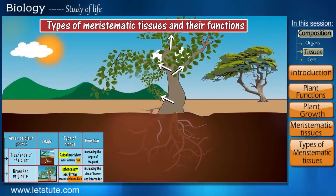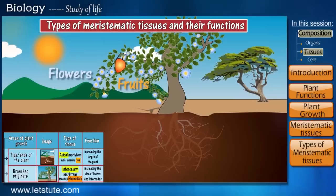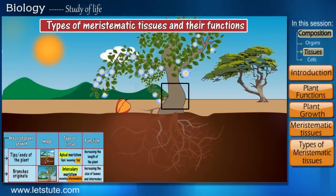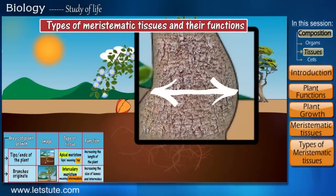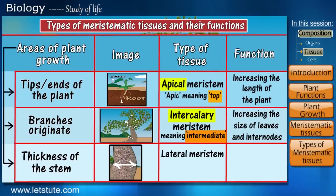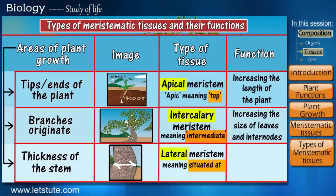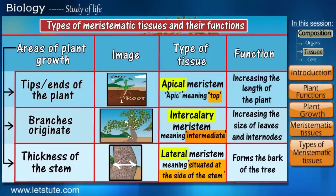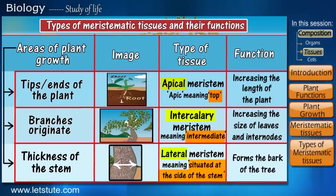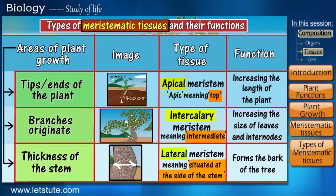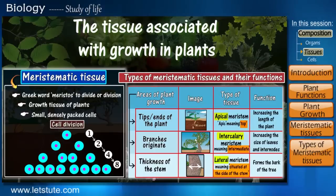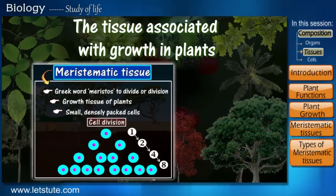Now, over a period of days, as the plant grows taller, it requires a strong stem to support its increasing weight. This is brought about by an increase in the thickness of the stem by the lateral meristem. And as the word lateral suggests, this tissue is situated at or on the sides of the stem and forms the bark of the tree. This growth is due to the presence of meristematic tissues only in these specific areas of the whole plant. So now we know what helps a plant to grow — it is the meristematic tissue.